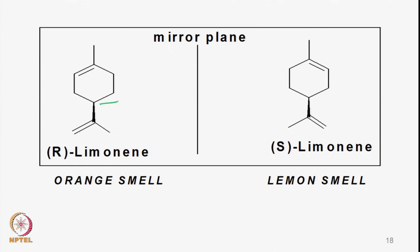Similarly, limonene has an asymmetric center: S-limonene and R-limonene are mirror images. R-limonene has orange smell, whereas S-limonene has lemon smell. These differences in odour, smell, and flavour arise because our receptors are also made up of optically active substances. Different enantiomers behave differently to the receptor and react differently, and accordingly the effects are felt.